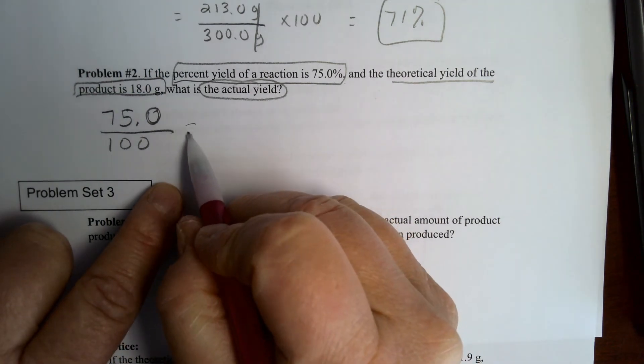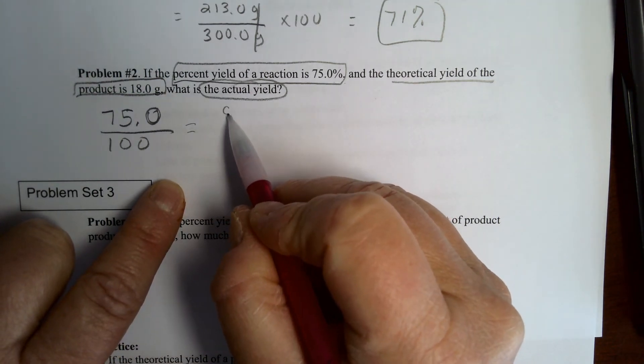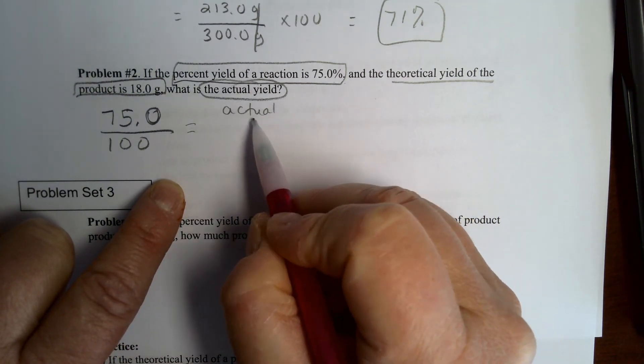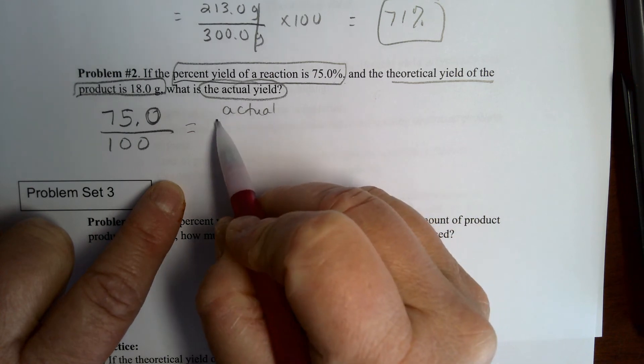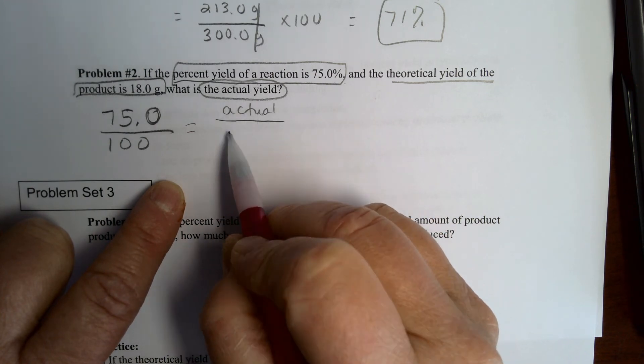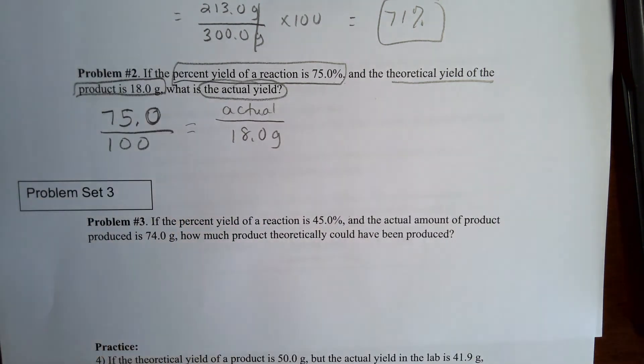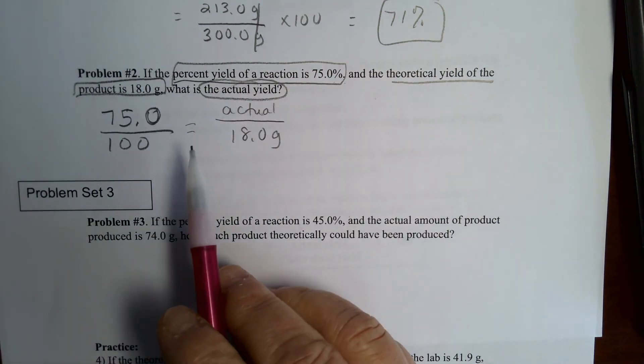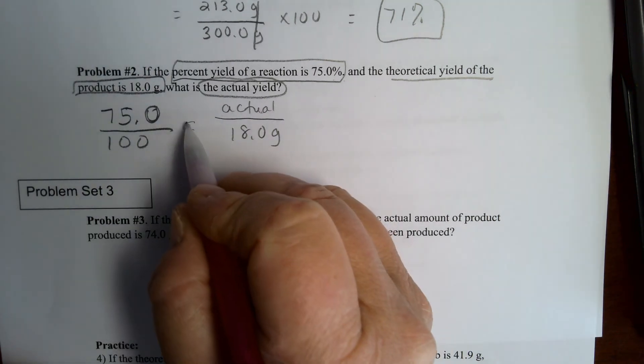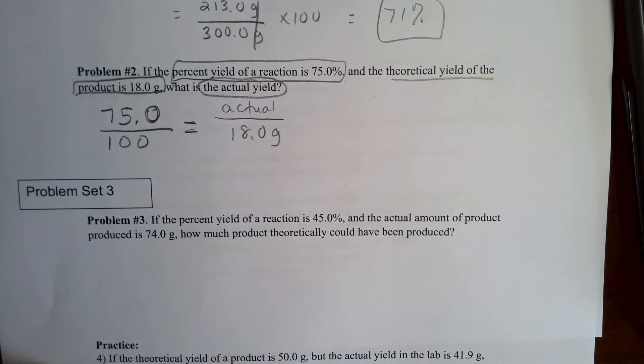And we're going to set that equal to our actual yield, which is going to be our x. We don't know what that is, but our theoretical is given to us at 18.0 grams. So here we have two fractions set equal to each other, so here is where we will cross multiply.